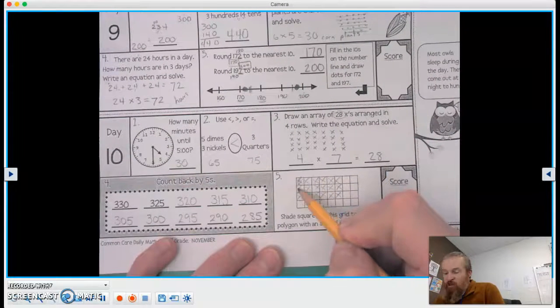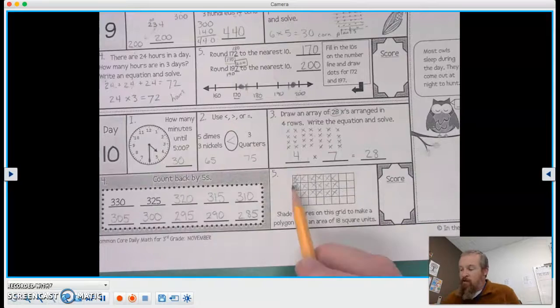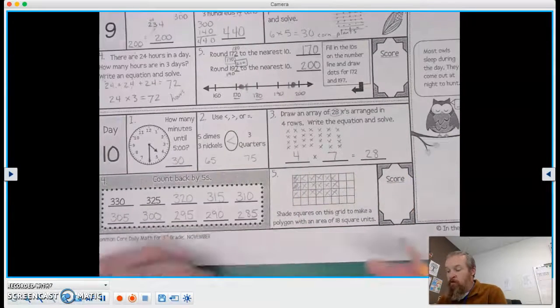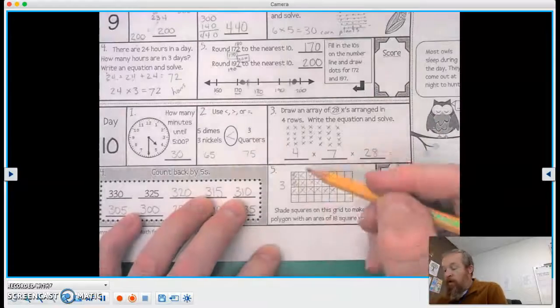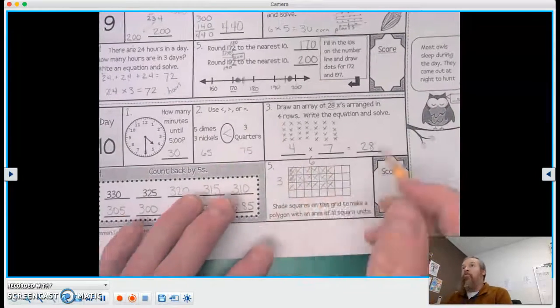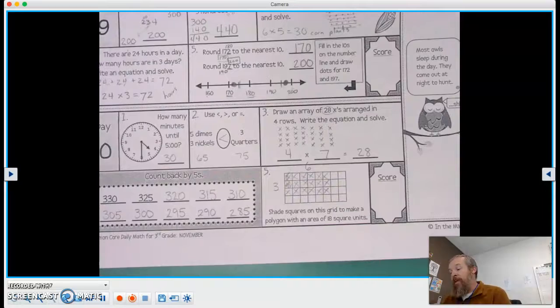So you can shade them all in if you want. I just made x's. So that is our area of 18 square units. We have a 3 by 6. 3 down by 6 across. 3 times 6 is 18.